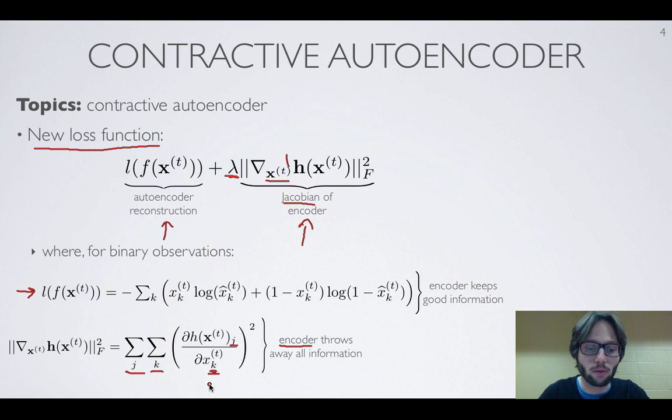So at that training example, what we're saying is that we don't want the hidden units to change if I add a little bit of random noise to it. I want the hidden layer to stay the same.